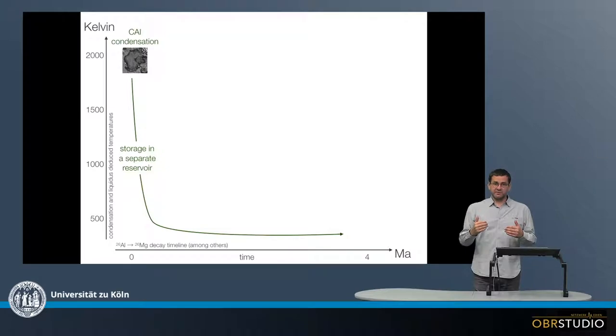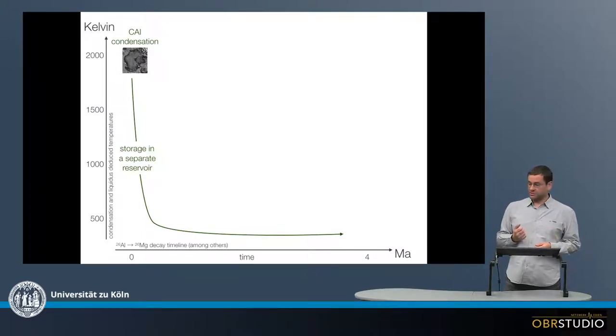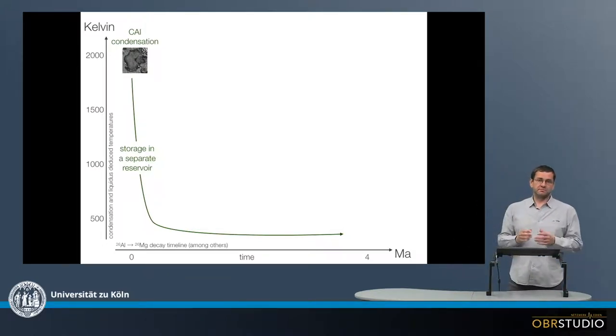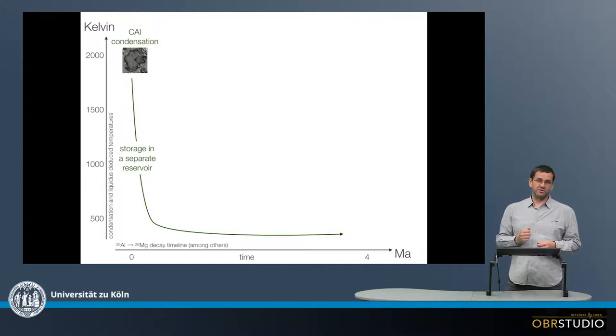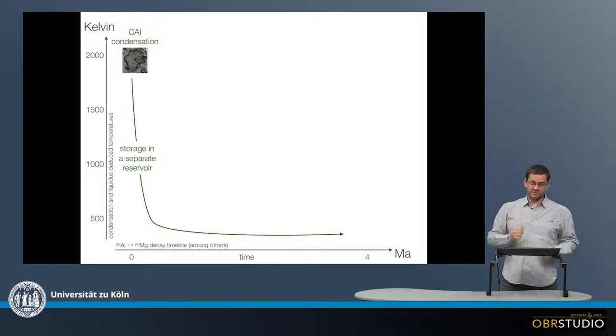And in these reservoirs, CAIs condensed. We know this because CAIs have a zoned structure, have irregular outlines that all point to a condensation origin. Also, element patterns often point to a condensation origin. The CAIs are among the first solids we have, which means they anchor the timing of the early solar system at T0. This is why these are at T0 and at very high temperatures because they condense from a gas.